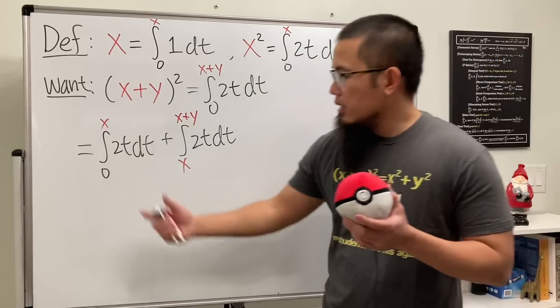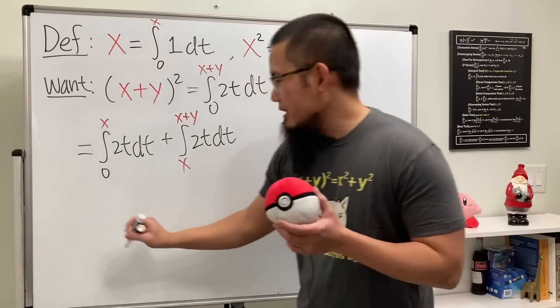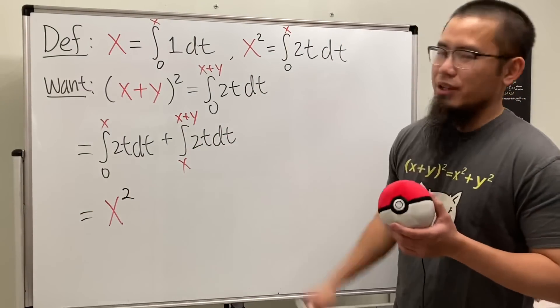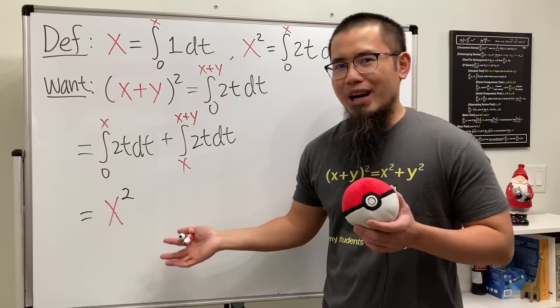So this is one thing that we can do when we have a definite integral. And notice, this right here, it's precisely our x². So that part is done. Very nice, huh? But how about this right here? Will this really give us the plus 2xy and also the y²?